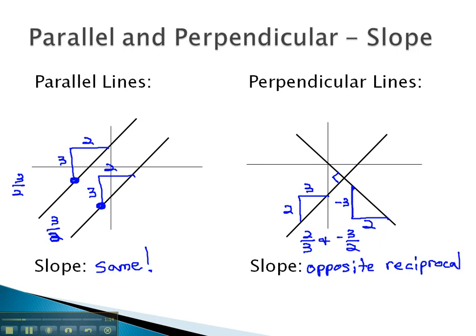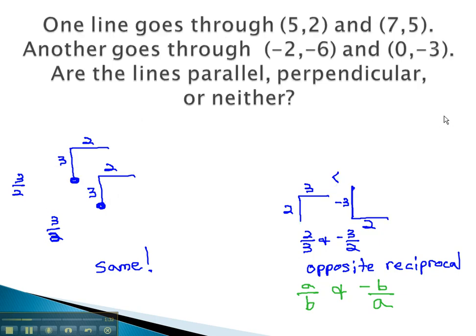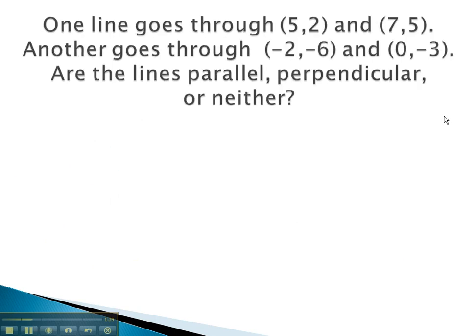This means one is positive and one is negative, and we flip the fraction over. So if one line has a slope of a over b, the perpendicular line will be negative b over a. Knowing these relationships, if we know the slope of two lines, we can identify what type of relationship we have between the lines.